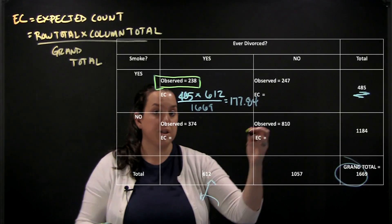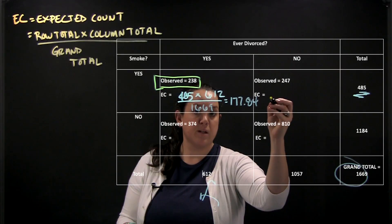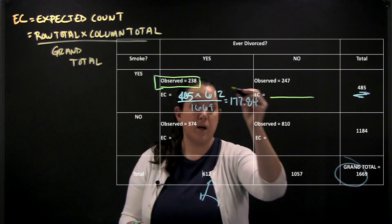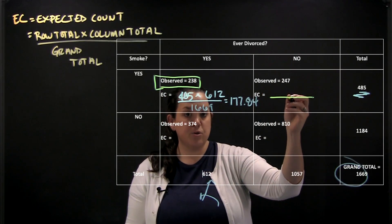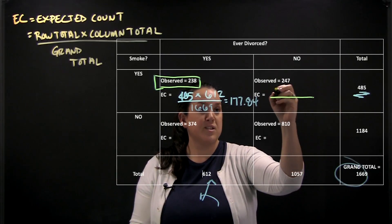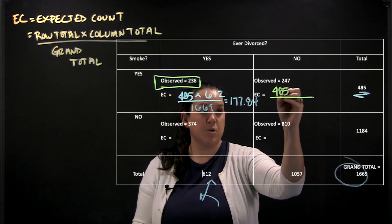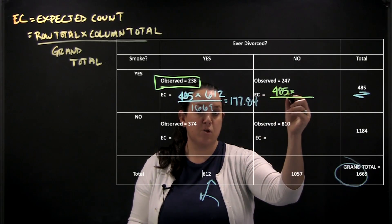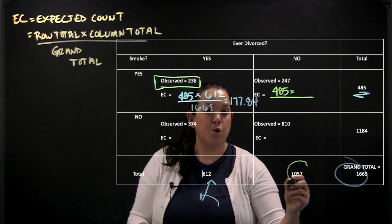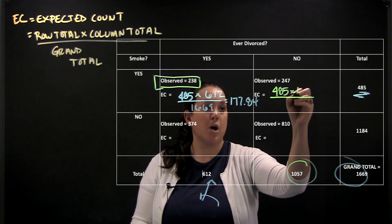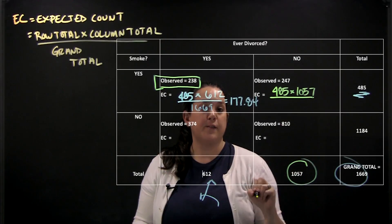So now if I move to the next cell my expected count for yes smoking and no divorce will still use the same row total because we're in the same row as the cell next to it. But now because we're in a new column we will use a new column total which is 1057.